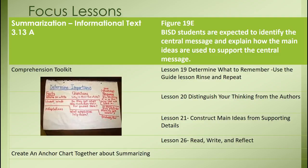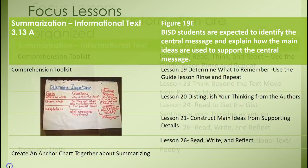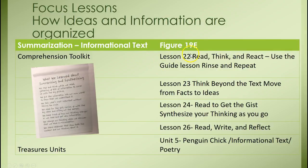Before looking at the unit overview, I suggest you go back to the comprehension toolkits — there are two different books. Look at the determining importance lessons, because that's the foundation for understanding summarization and Figure 19E. Go through lessons 19 through 26 because the read, writing, and reflect component is very important. Also use the summary lessons 22 through 26. Remember they have the model lesson and right behind it is the lesson guide, so you can use them with any text you like.